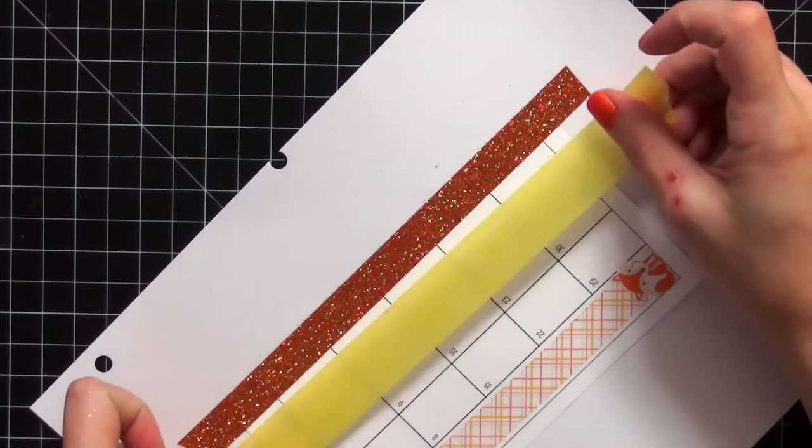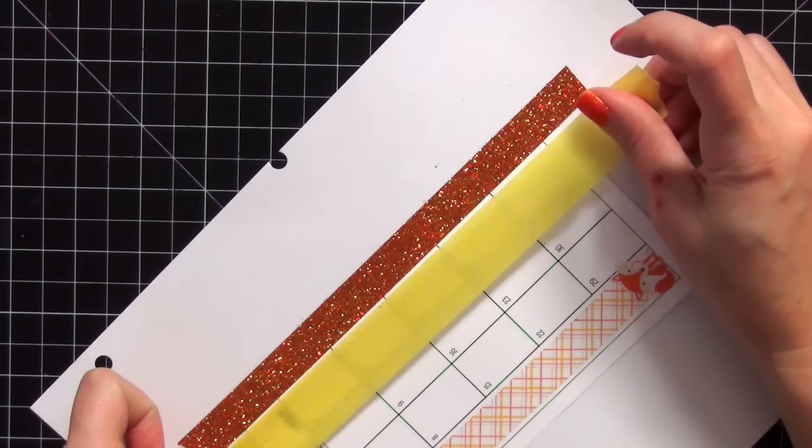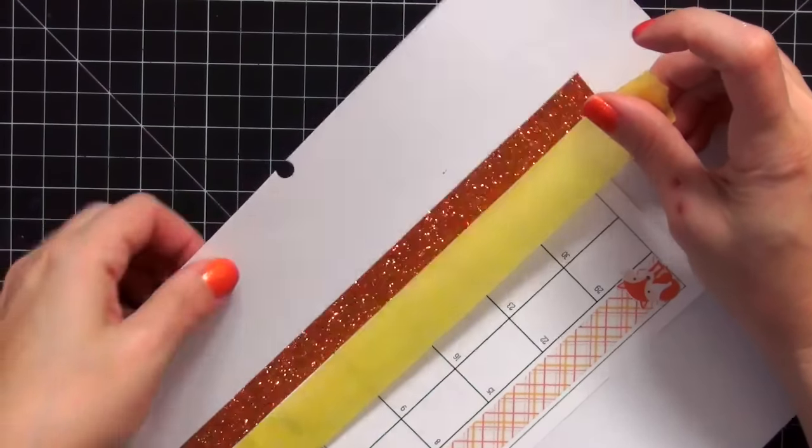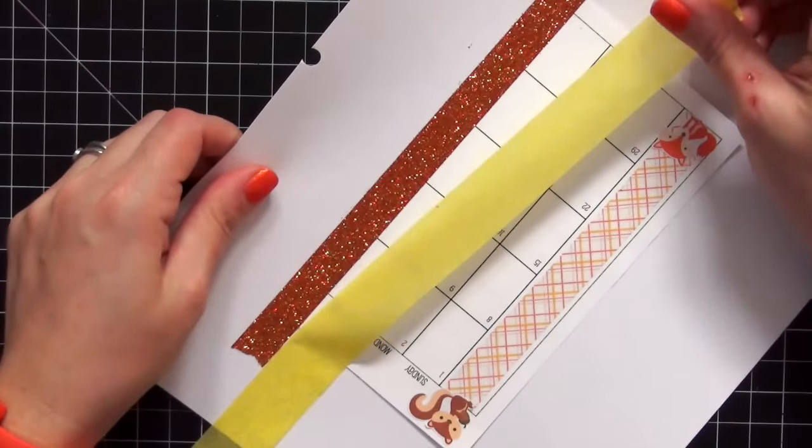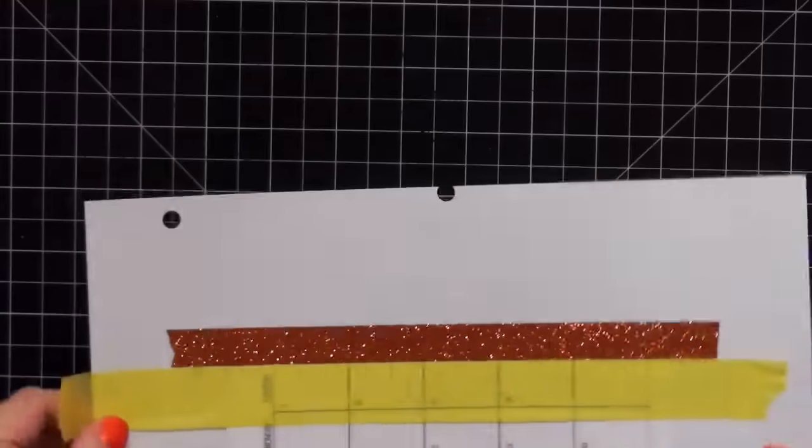Basically, what you want to do is you want to run this tape right up against the washi tape. You don't want to have any gaps. Okay, so that is what it looks like when I am done.